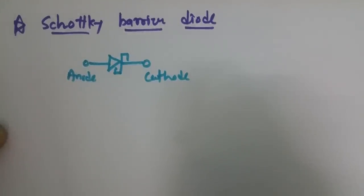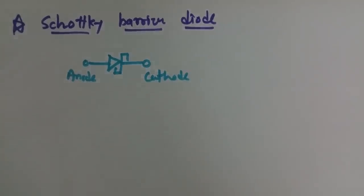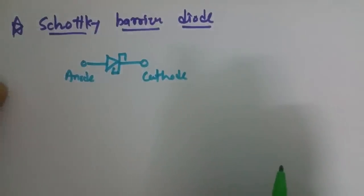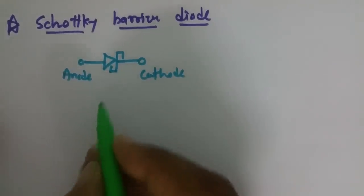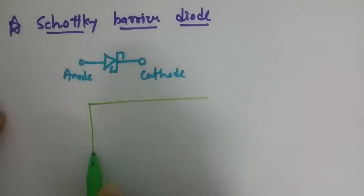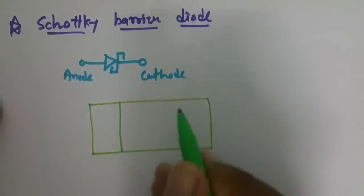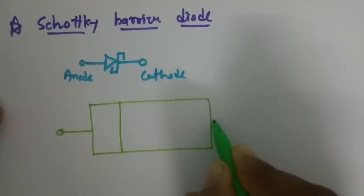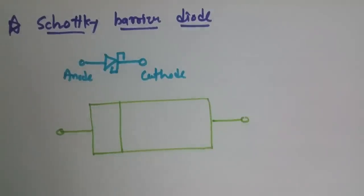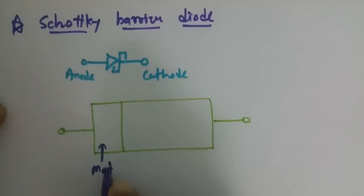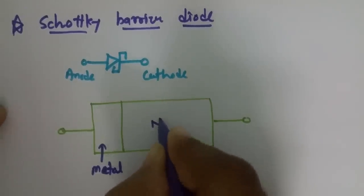Now, what is its internal structure? The design goal of the Schottky Barrier Diode's internal structure is to remove the depletion region. In its structure, metal is combined with semiconductor material — it is a unipolar device, where this is the metal and this is the N-type material.